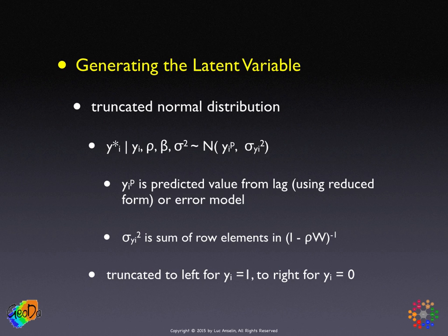For both models, the variance is obtained from the rho elements in the inverse of (I − ρW). There will be a computational issue here because we need to compute this inverse each time. The truncation is, as mentioned, to the left for y equals 1 and to the right for y equals 0. This allows us to draw values for the latent dependent variable and then treat them as if they are observed.